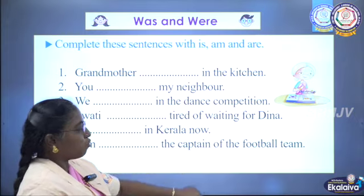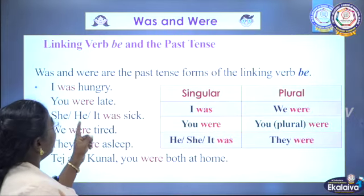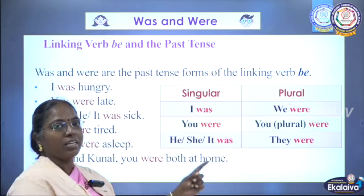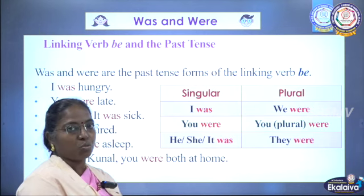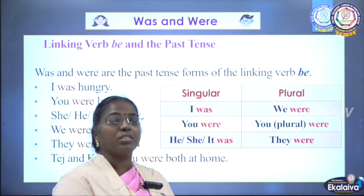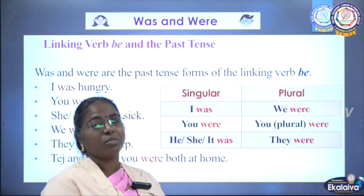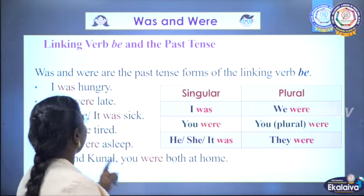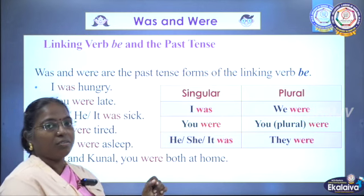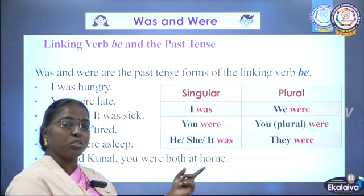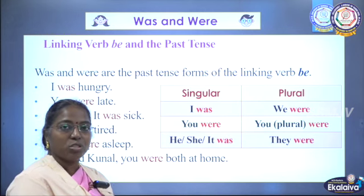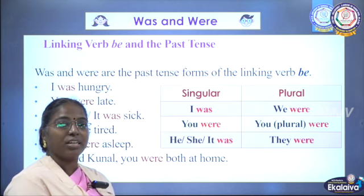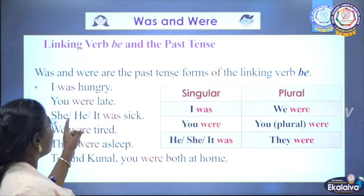Shall we move to the be form in the past tense? Linking verb be and the past tense: was and were are the past tense forms of the linking verb be. In present tense we use is and are; in past tense, is changes to was and are changes to were. For example: I was angry — in present tense I would say I am angry, but since the event has finished, we use the past tense was.